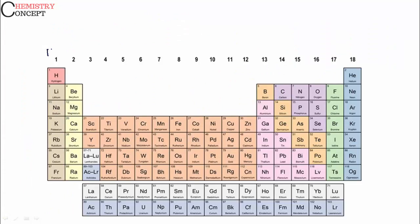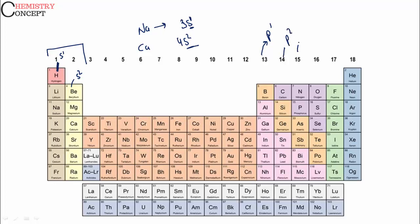Apart from this, group 1 represents S1 elements and group 2 represents S2 elements. For example, sodium's outermost configuration is 3s1, so it belongs to group 1. Calcium is 4s2, so it belongs to group 2. Similarly, group 13 is the first member of p-block and corresponds to P1 configuration. Group 14 is P2, group 15 is P3, group 16 is P4, group 17 is P5, and group 18 corresponds to P6 electronic configuration.